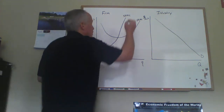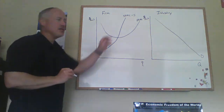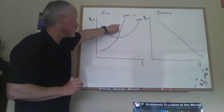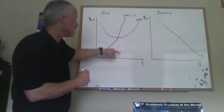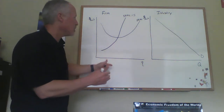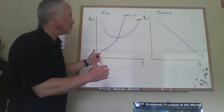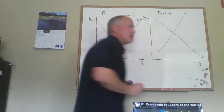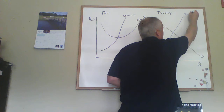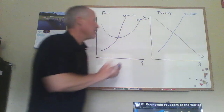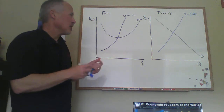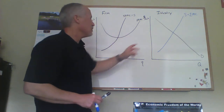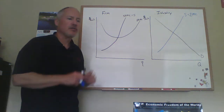The short-run marginal cost curve is the supply curve for the individual firm. With a fixed number of firms in the industry, we can sum up these individual firm supply curves horizontally — meaning that at any given price, we simply add up the quantity each firm would supply over all 50 or 100 firms in the industry, and that gives us the industry supply curve. We come over to the industry diagram and draw in the industry supply curve, labeled as the summation of marginal cost. With a fixed number of firms, we're summing over a fixed number, so that allows us to place the industry supply curve precisely.